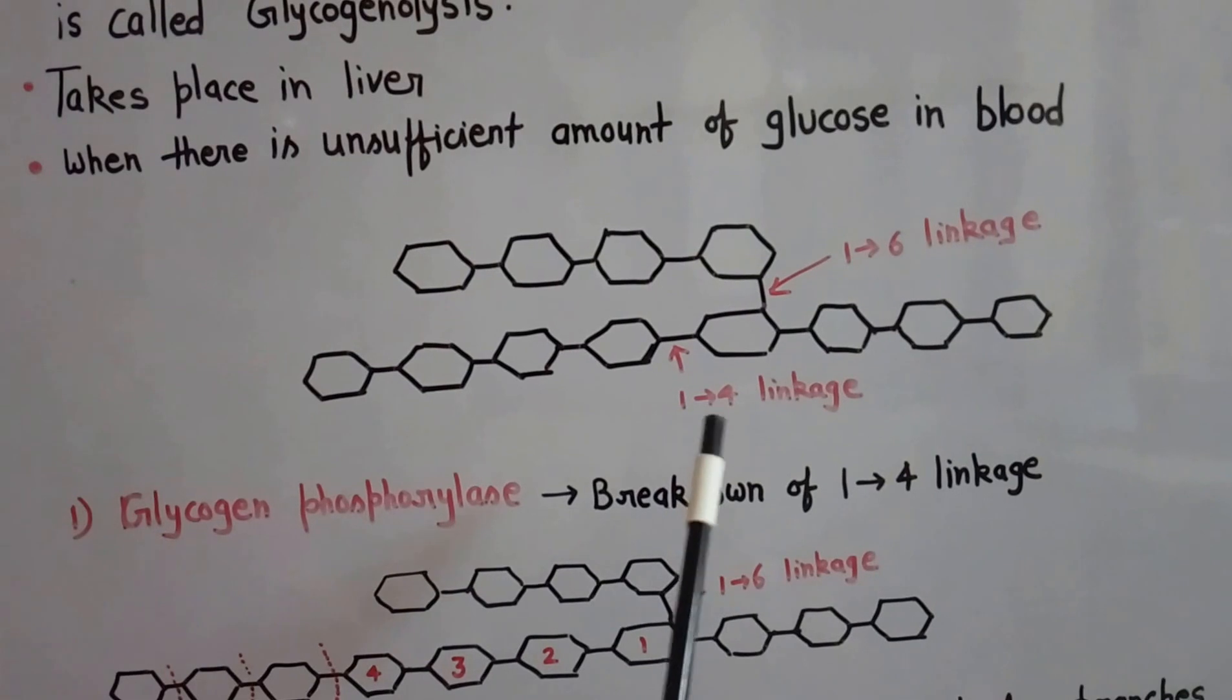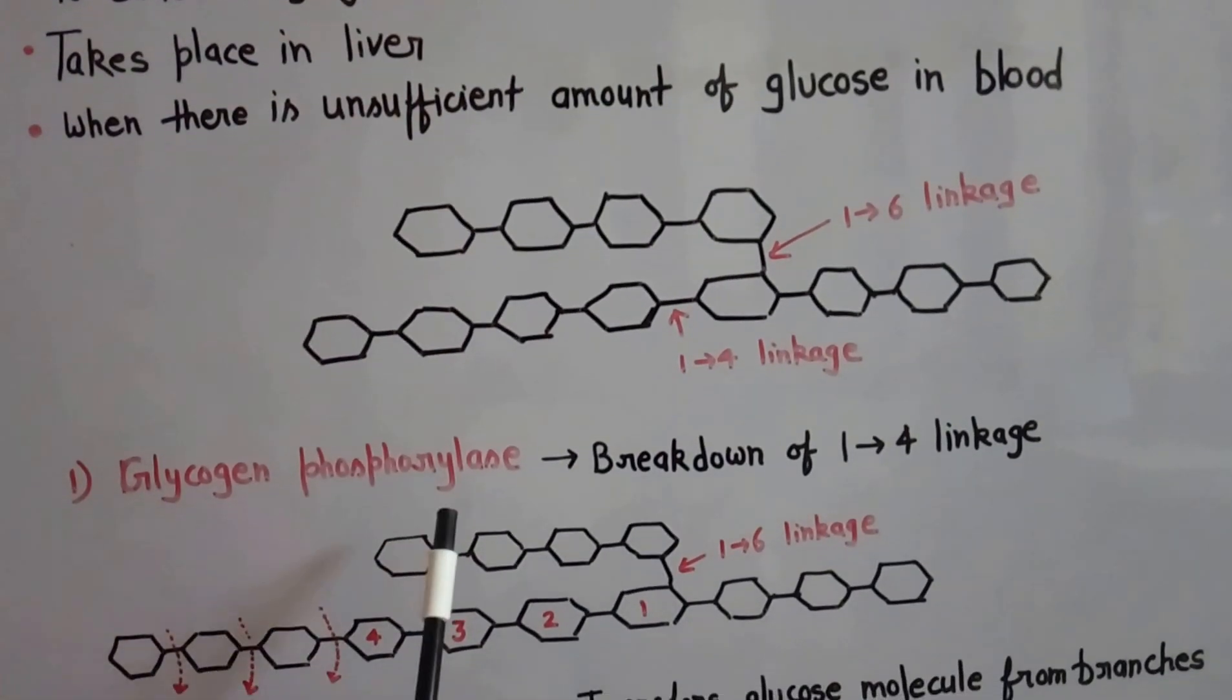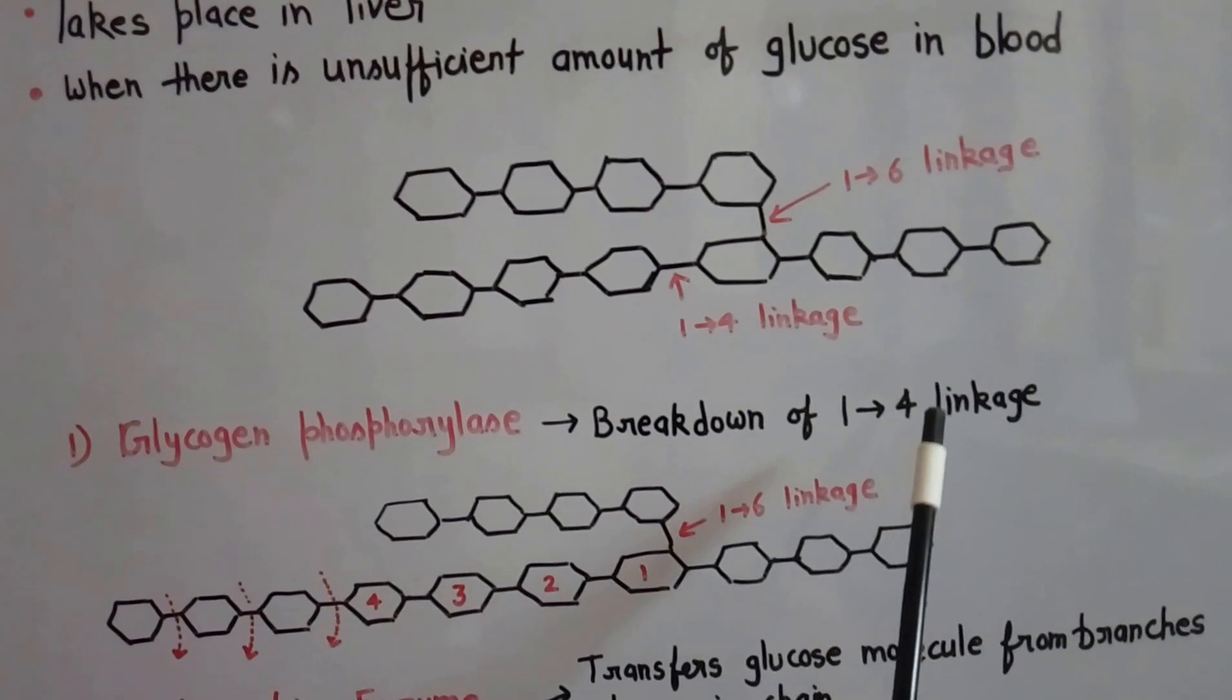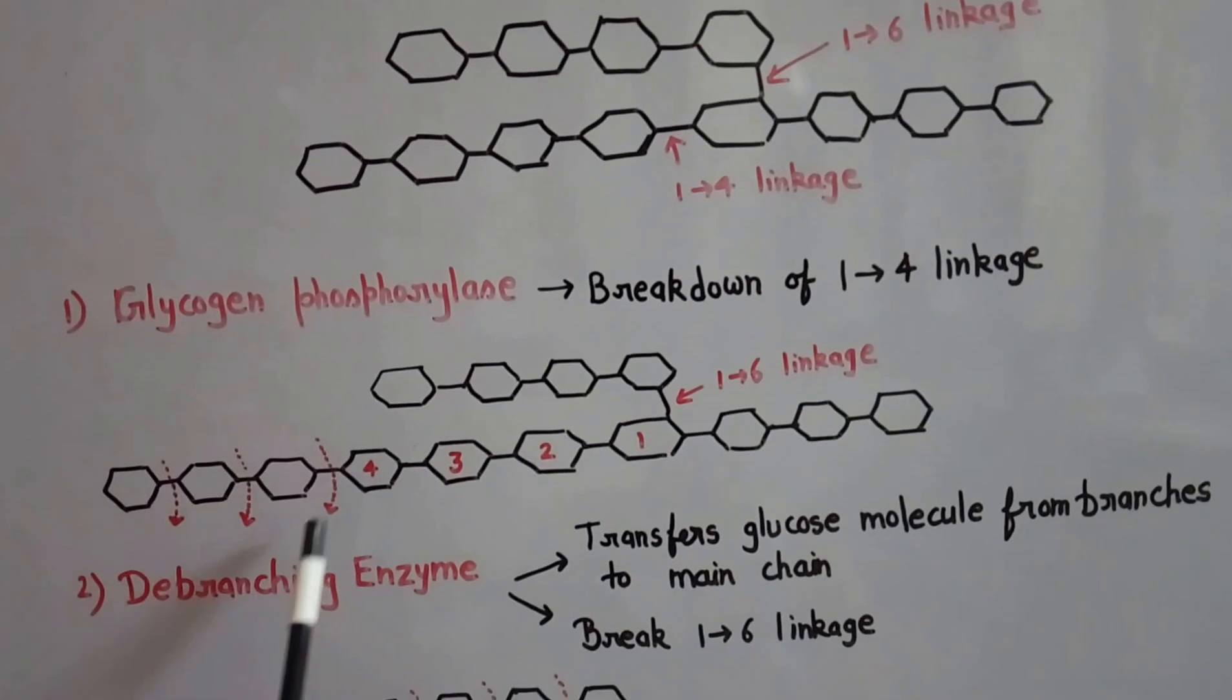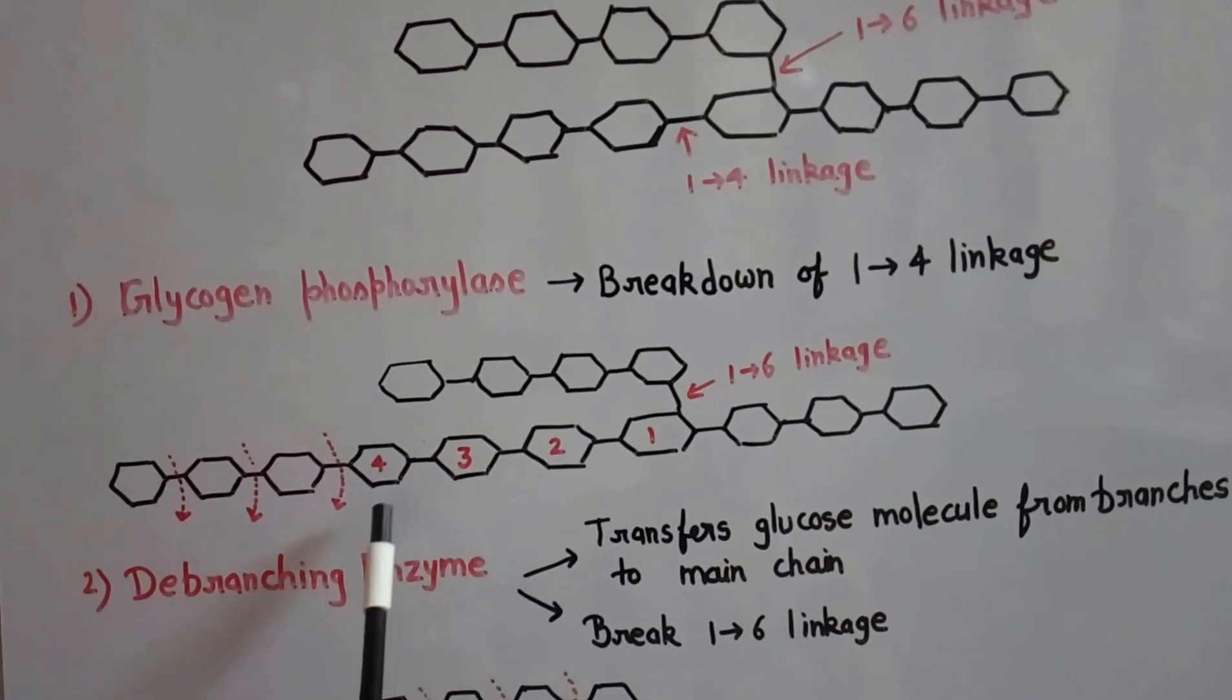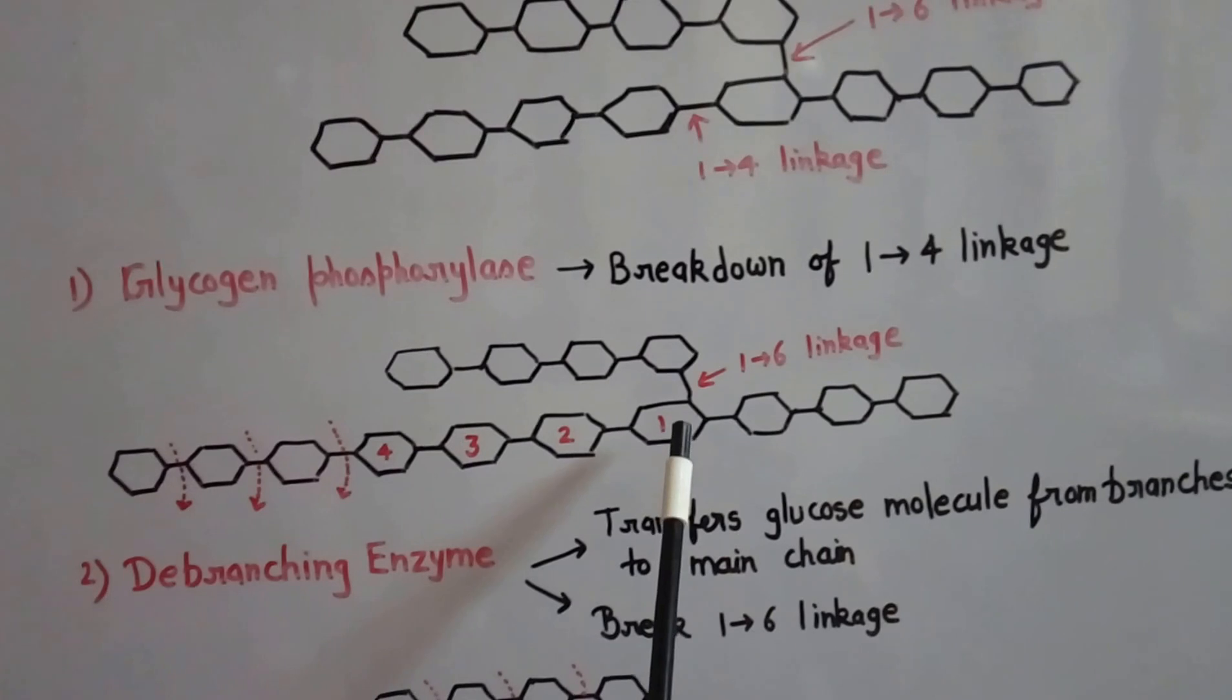The breakdown of glycogen molecule takes place by two enzymes. One is glycogen phosphorylase which breaks down the 1,4 glycosidic linkage. This enzyme breaks down the 1,4 linkages until there are 4 glucose molecules remaining from the 1,6 linkage.